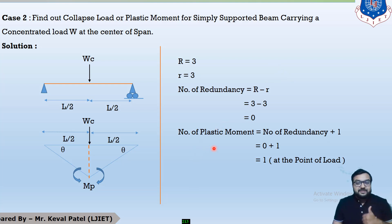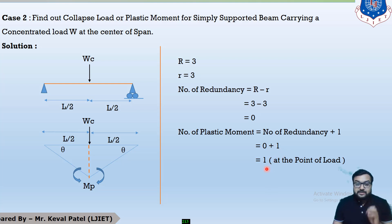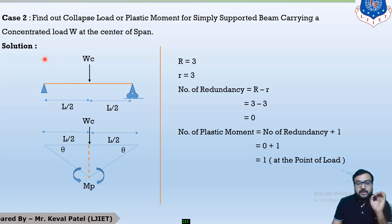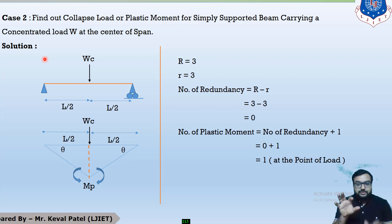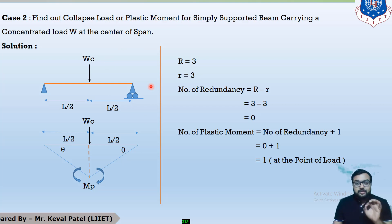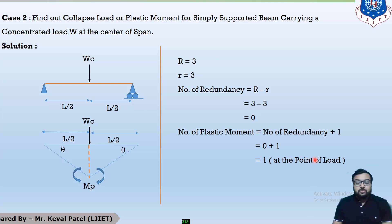Step 2: the number of plastic hinges equals the number of redundancy plus 1, which is 0 + 1 = 1. It means there is only one point in the whole system that takes moment. The hinge support only restrains vertical and horizontal force — it does not restrain rotation. The roller support restrains only vertical force. So that one plastic hinge forms at the point where the point load is acting.